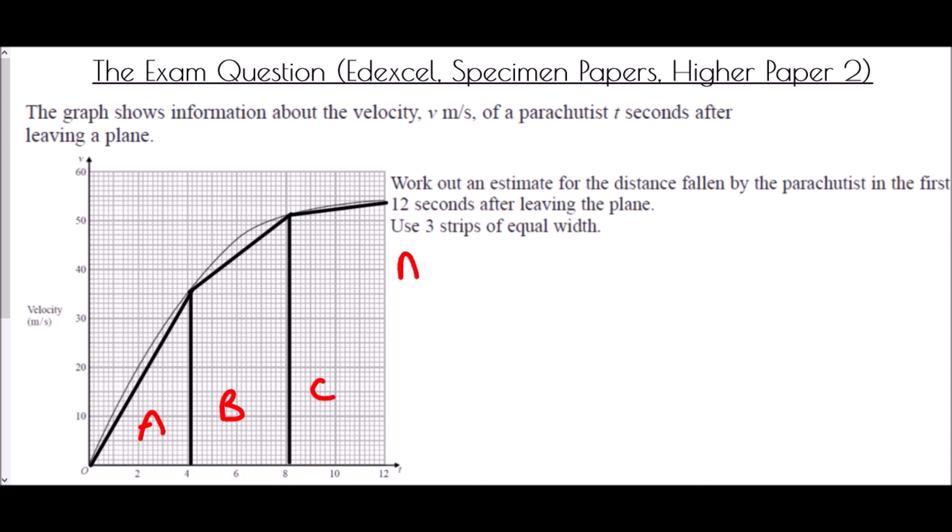So in section A, we're going to find the area of that triangle. And so it's going to be a half of the base, which is 4, and times the height, which in this case is 35. And if we do that, we have a half times 4 times 35. That's going to be 70 metres.